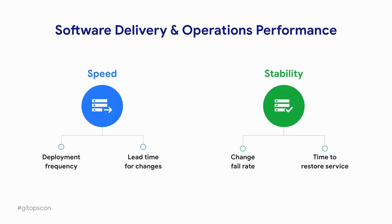How do we measure software delivery performance? In our research program we've found a valid and reliable way to do just this. There are two metrics representing speed and two representing stability. For speed, we have deployment frequency — how often you deploy — and lead time for changes, measuring the time from a commit all the way to that commit being deployed into prod. On the stability front, we have change fail rate — how many changes you ship that have failures — and time to restore, which measures how long it takes to remediate a broken problem in production.